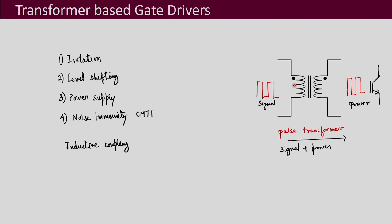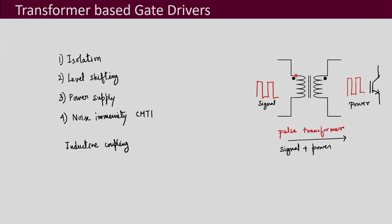One problem with transformers is that they only allow AC to pass through. If you give DC to a transformer, it will get saturated. The basis of transformer operation is that AC is given on the primary, stepped up or down, and obtained on the secondary. But the gate signals have DC in them — for example, from 0 to 5 volts — so DC is not allowed and we need a solution.